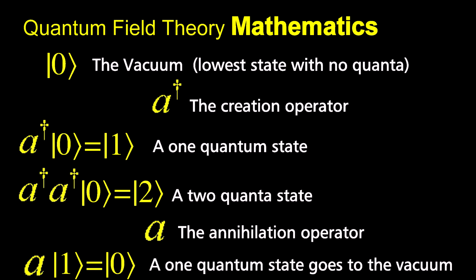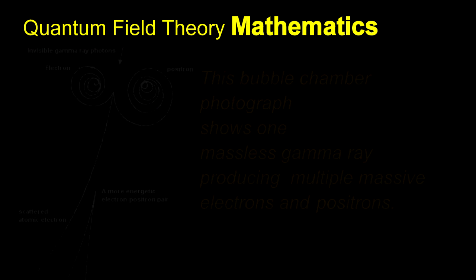Those of you that have studied quantum mechanics recognize this as Dirac's notation for Hilbert space math. What's new is that the number of field quanta is allowed to increase and decrease. In quantum mechanics, you have a fixed number of quanta.